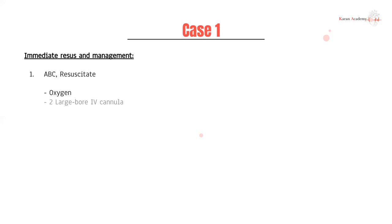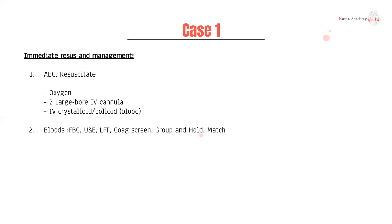Immediate resuscitation management: before we even talk about what the pathology might be, you want to make sure they're hemodynamically stable. Follow the ABCs — ensure adequate oxygenation, two large IV cannulas, give IV crystalloids, and if they've had significant bleeding, give them blood. For bloods, you want FBE, UEC, LFT, coags, group and hold, as well as a cross-match, because they may need blood further down the track. Monitor them very closely with regular vital signs.